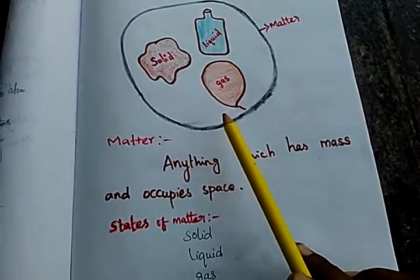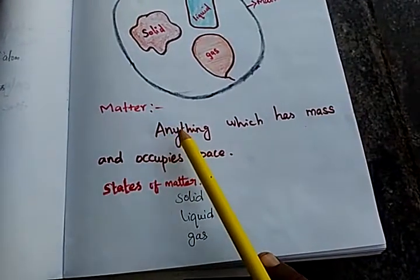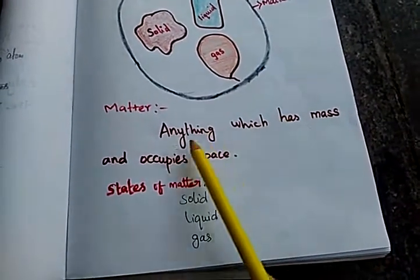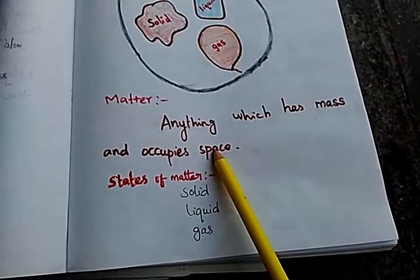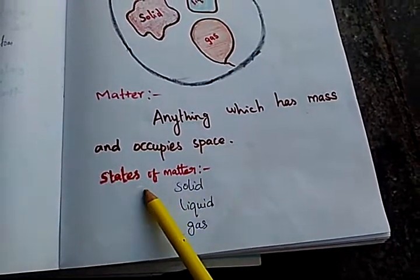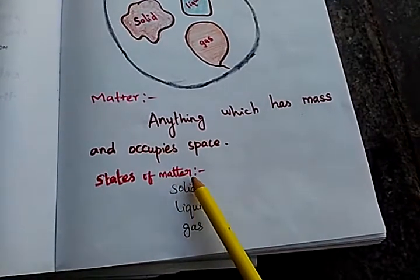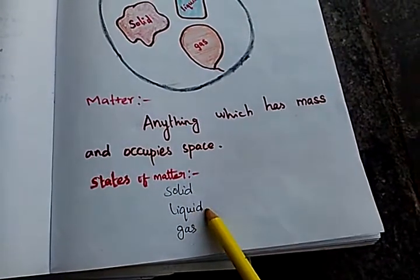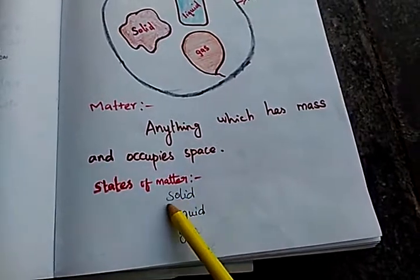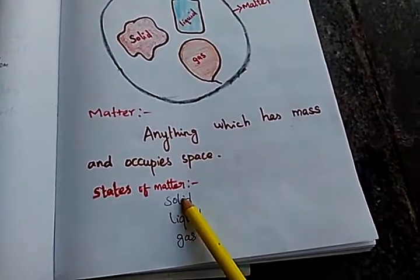Finally, we know that matter is defined as anything which has mass and occupies space. The three states of matter are solids, liquids, and gases.